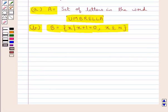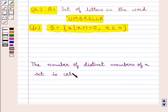Before moving to the solution, let's first define the cardinal number of a set. The number of distinct members of a set is called the cardinal number of the set.